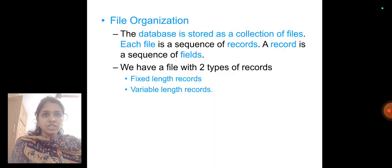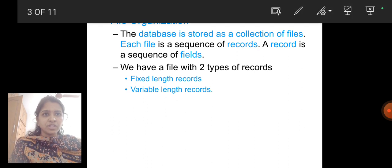File organization. The database is stored as a collection of files. Each file is a sequence of records. A record is a sequence of fields. We have a file with two types of records: one is fixed length records, the other one is variable length records.